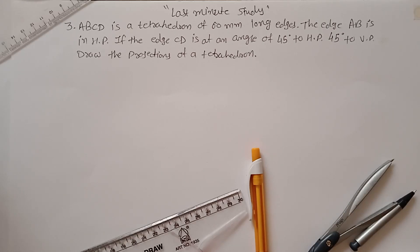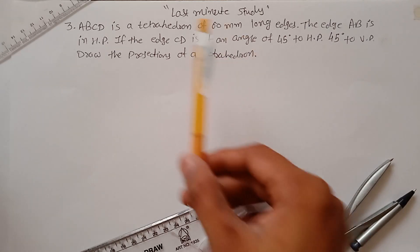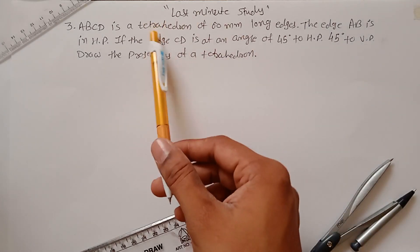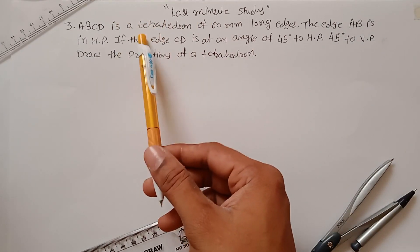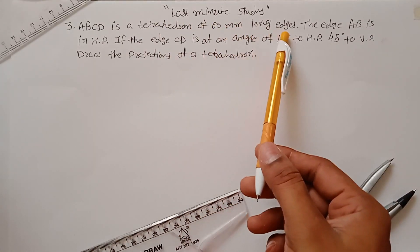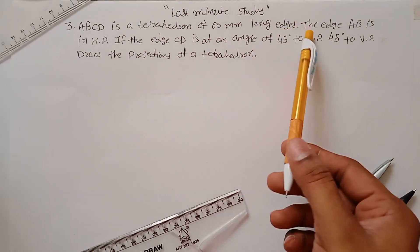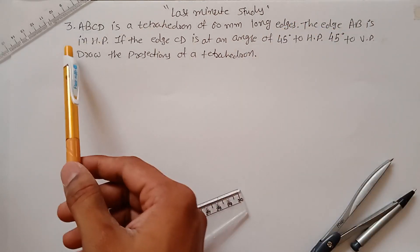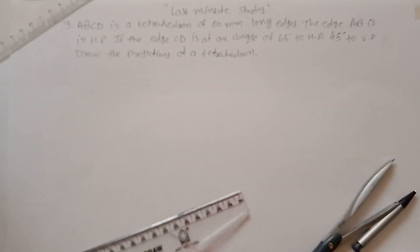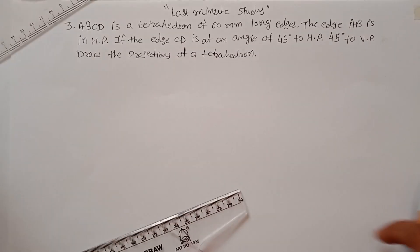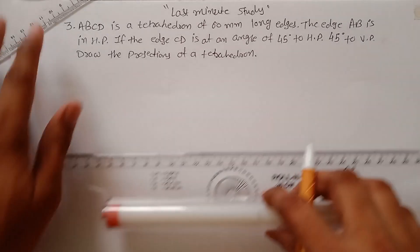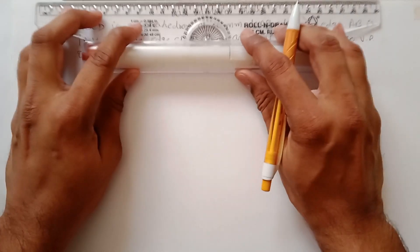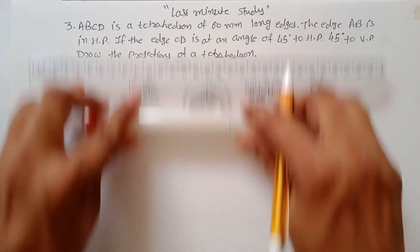Problem number three from projection of solids. ABCD is a tetrahedron with a 60mm long edge. The edge AB is in the HP. Let's start with the first position — the initial position.